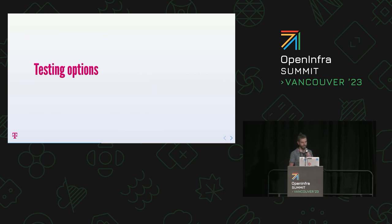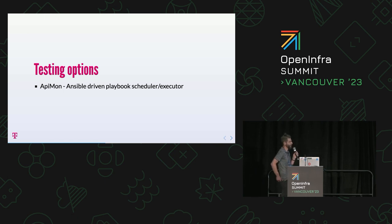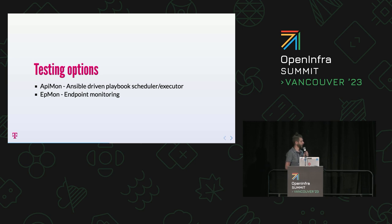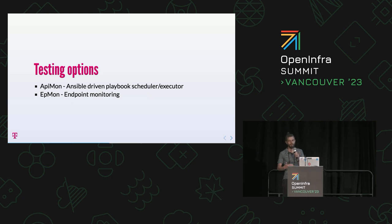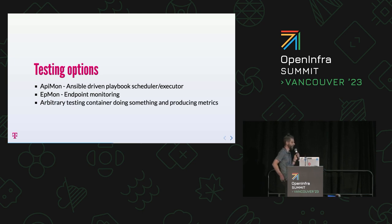Testing options - all those elements in the left box. We have apimon, which is more or less a historical name because when we started we were thinking about only testing the APIs. Then we have epmon, which stands for endpoint monitoring - it doesn't make sense for us to always try to create a server; we would like easier tests like: is the endpoint there, is it returning the results we expect? This gives us the possibility to run easier tests, not complex ones. And then we have a more complex addition to run tests for static resources and so on - basically just a container running out there permanently sending requests.